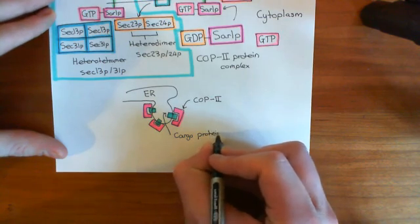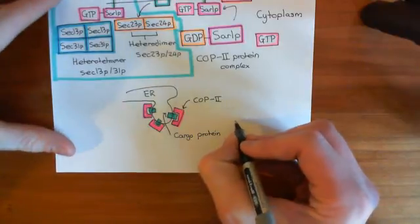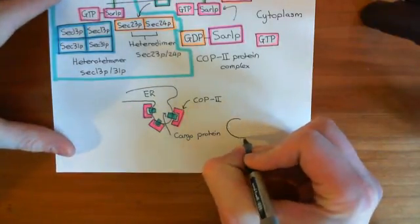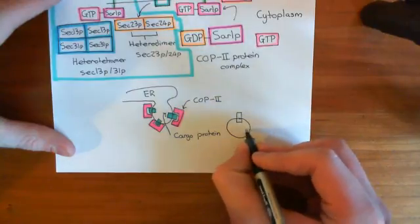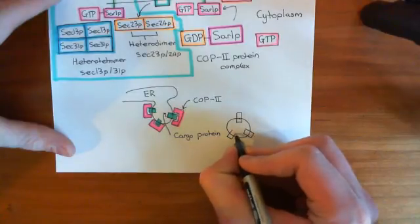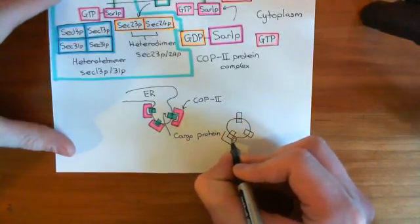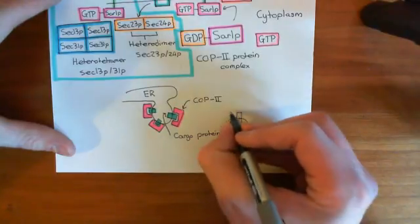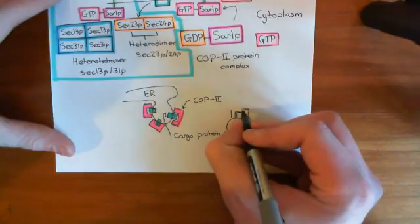And what's going to happen is that, overall, this whole vesicle is now going to pinch off. So you're going to produce a COP-2 coated protein vesicle. So here's the cargo protein in the protein vesicle. And then it will be coated in COP-2, which is why it's known as a COP-2 coated vesicle. So let me just finish this picture, and then we'll end this video here. And we'll continue our discussion in the next video.